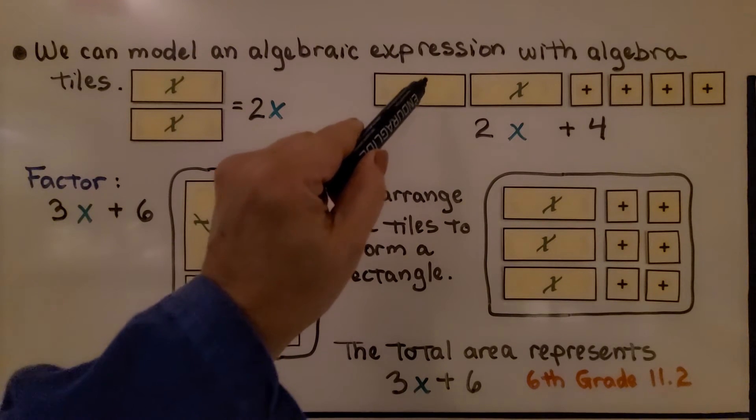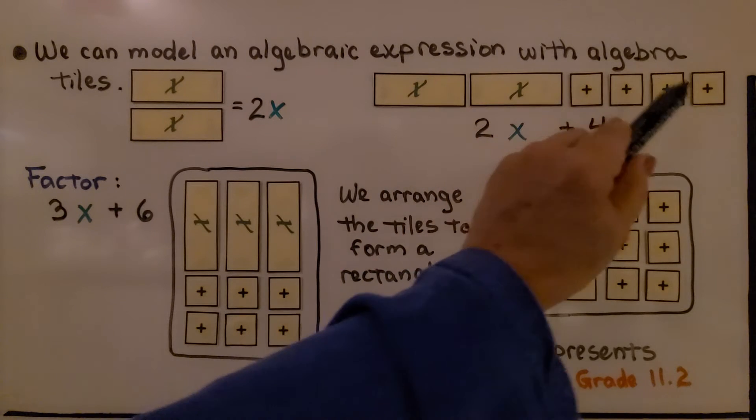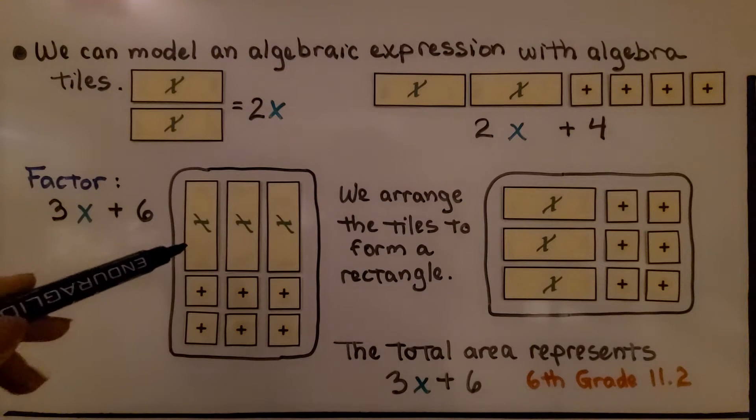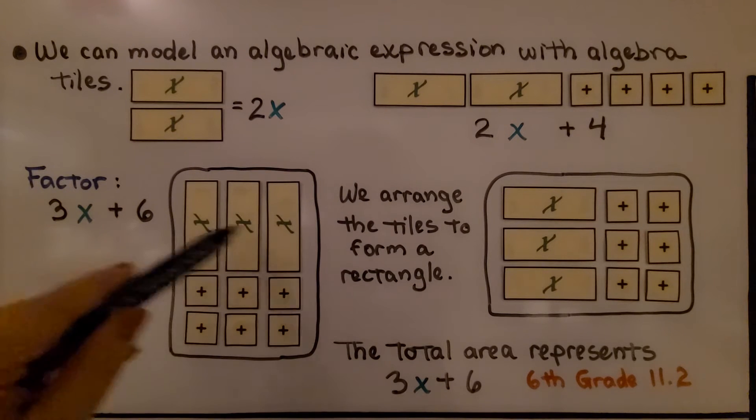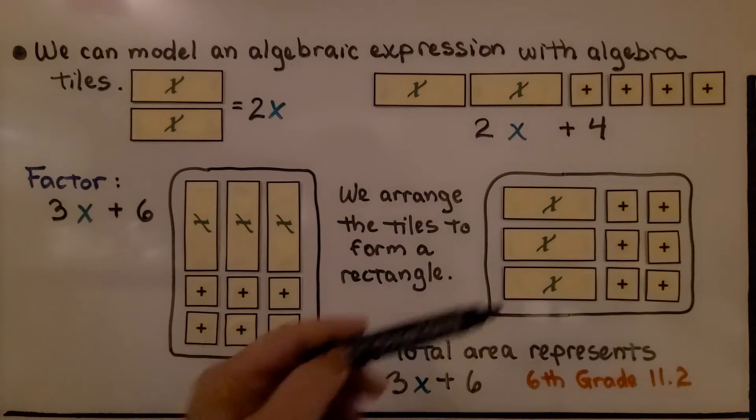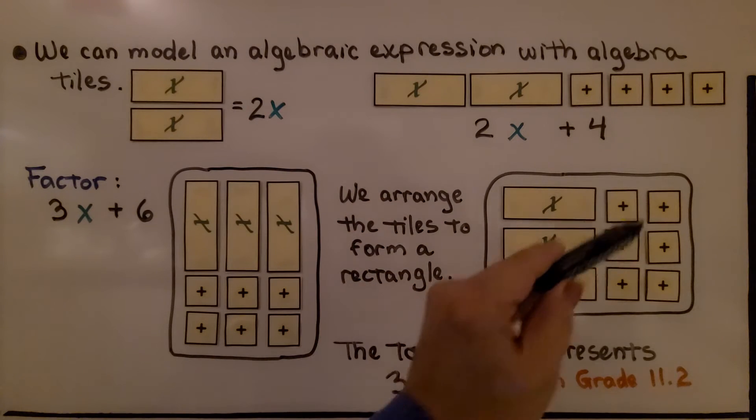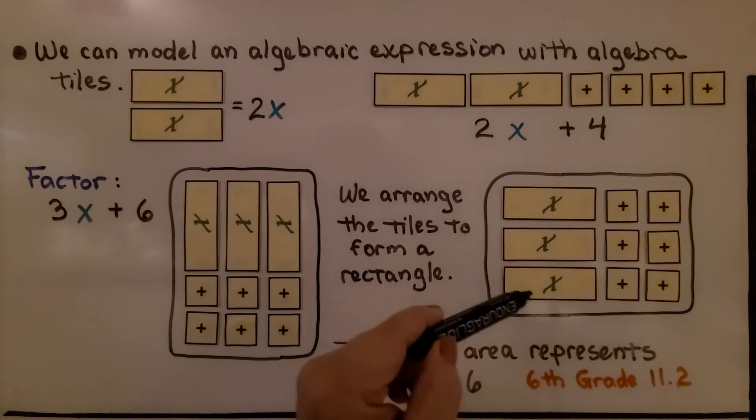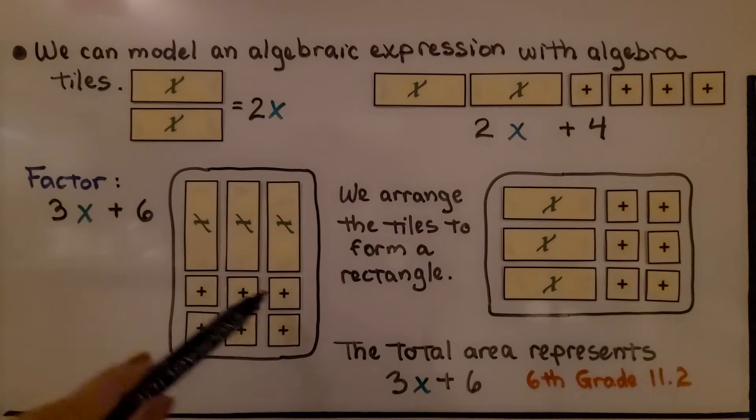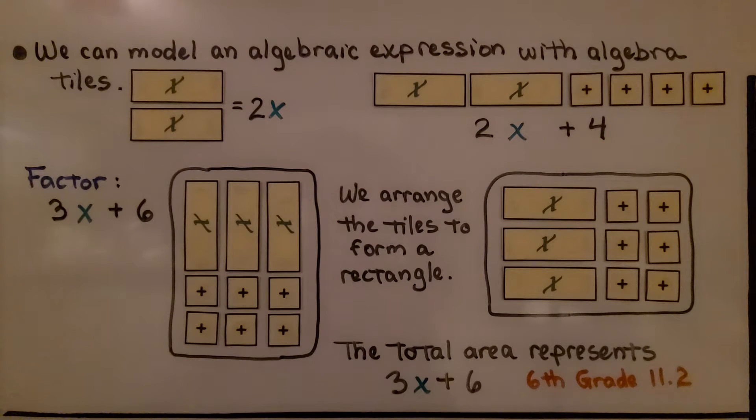Here we can put 2x plus 4. If we want to factor 3x plus 6, we can arrange the tiles to form a rectangle. We have 3x plus 6, with positive 6. We can also arrange the 3x and the positive 6 this way to make the rectangle. The total area represents 3x plus 6. We used these algebra tiles back in 6th grade math, lesson 11.2. You can watch those videos linked in the description if you'd like a quick refresher.